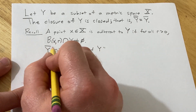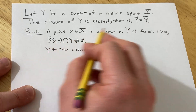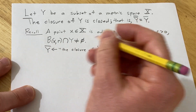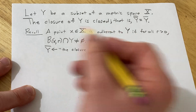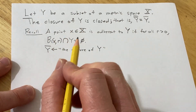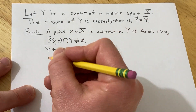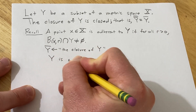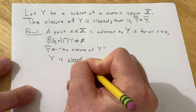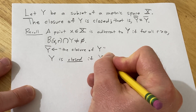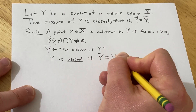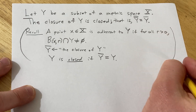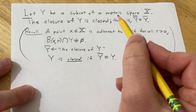So all the elements in this set are adherent to Y — it's just a collection of all the points that are adherent to Y. And we say that Y is closed if the closure of Y is equal to Y. So those are the things that we need in order to do this proof.